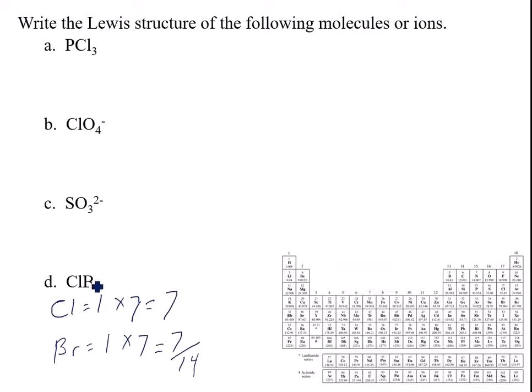There is no central atom because it's just two atoms, so it's chlorine beside the bromine. I draw a dash, that's two, leaving me twelve.